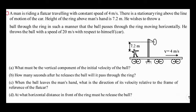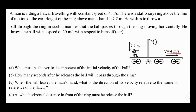Hello friends, let's solve this question. A man is riding a flat car traveling with a constant speed of 4 meters per second. This diagram depicts a man riding on a flat car, and that flat car is moving with a velocity of 4 meters per second.